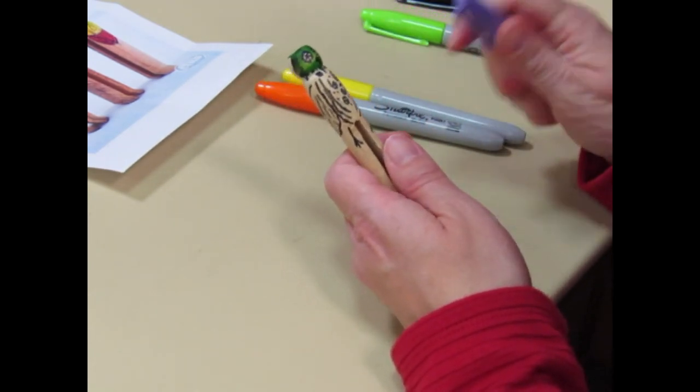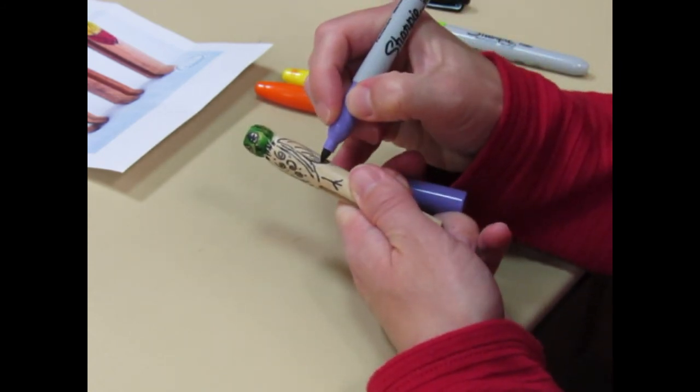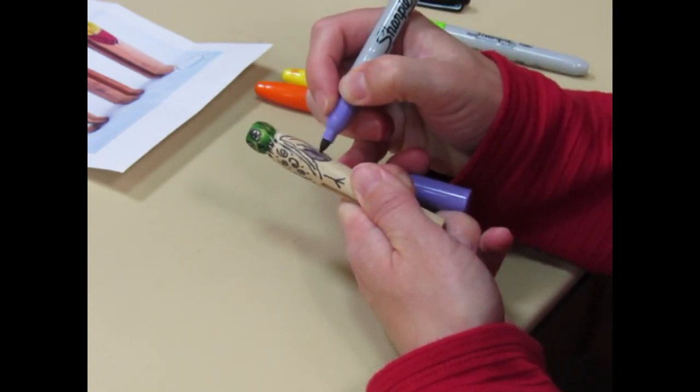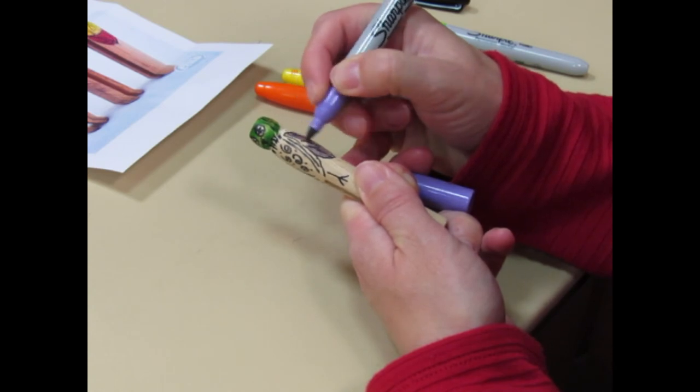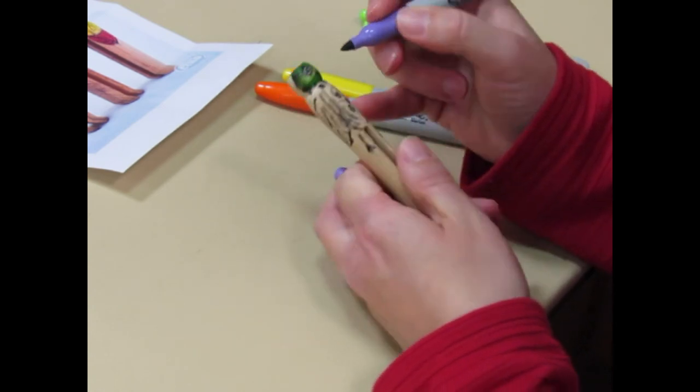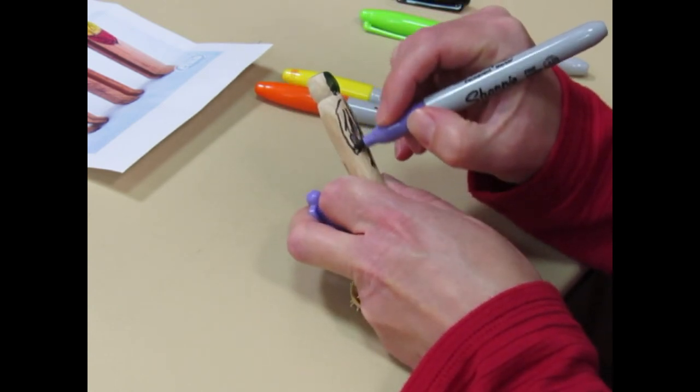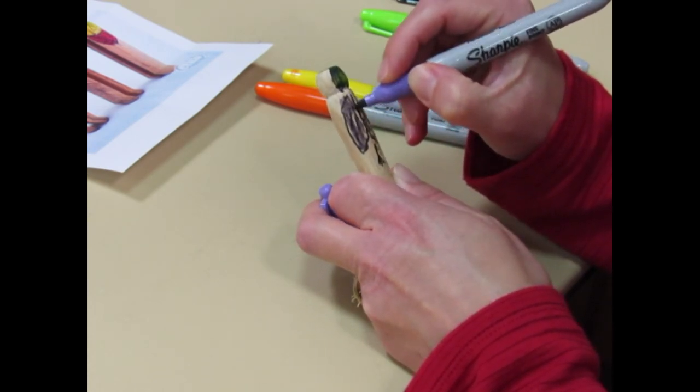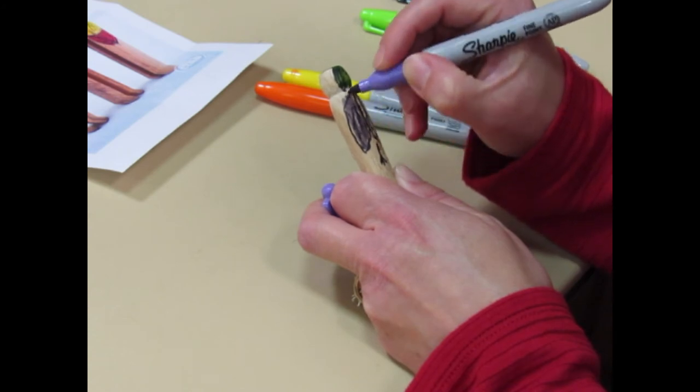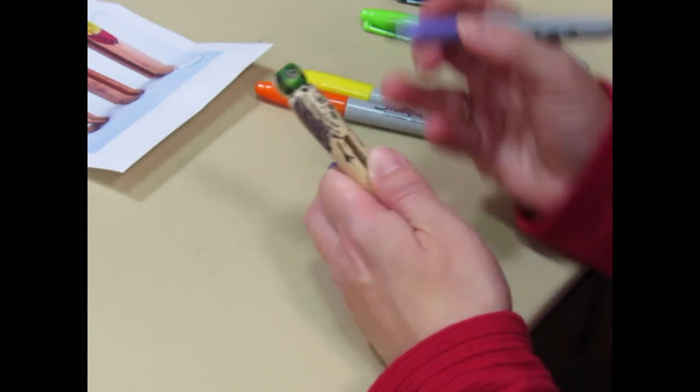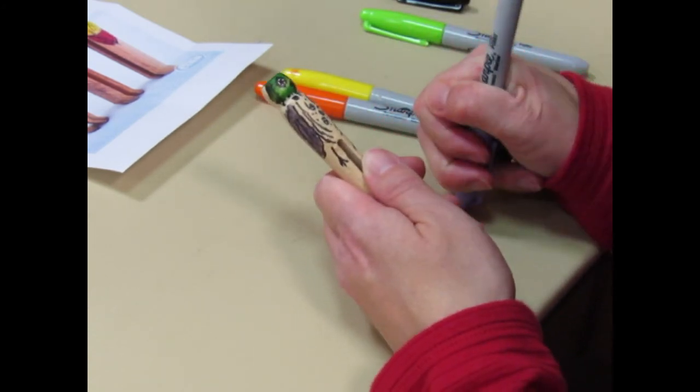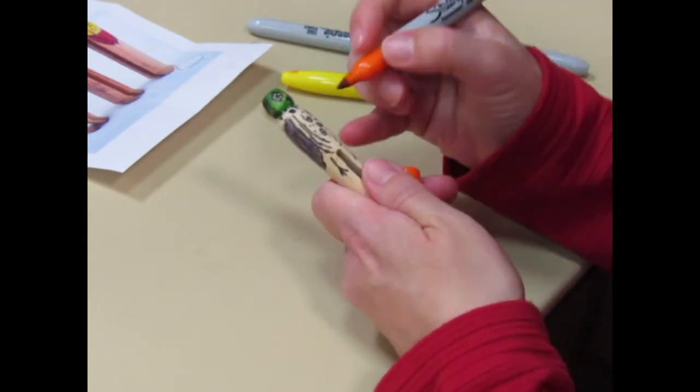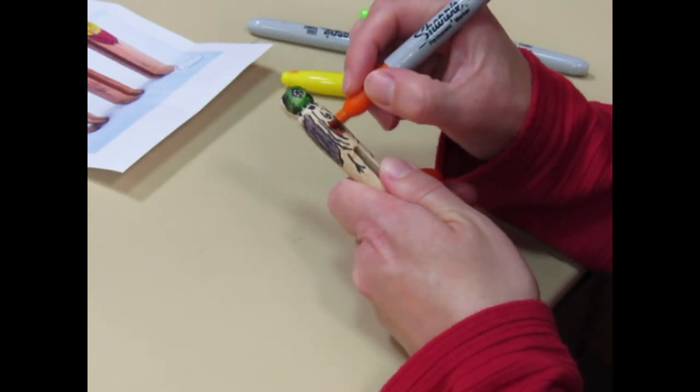So let's see here, put some purple on the wings. And then I think I will add some orange here to the center.